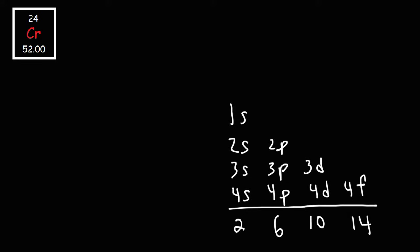Now what we need to do is write the electron configuration in such a way that the exponents add up to 24. So let's start with 1S. We're going to have 1S2, and then after that...